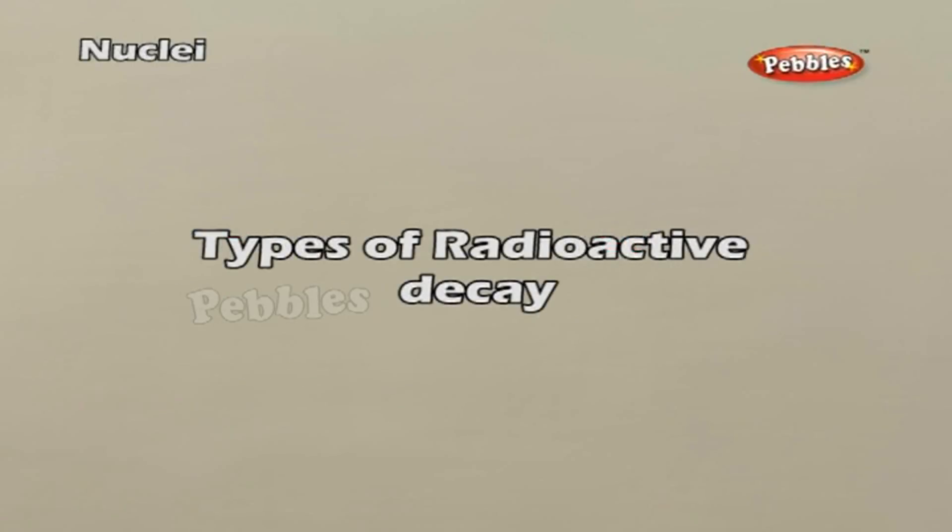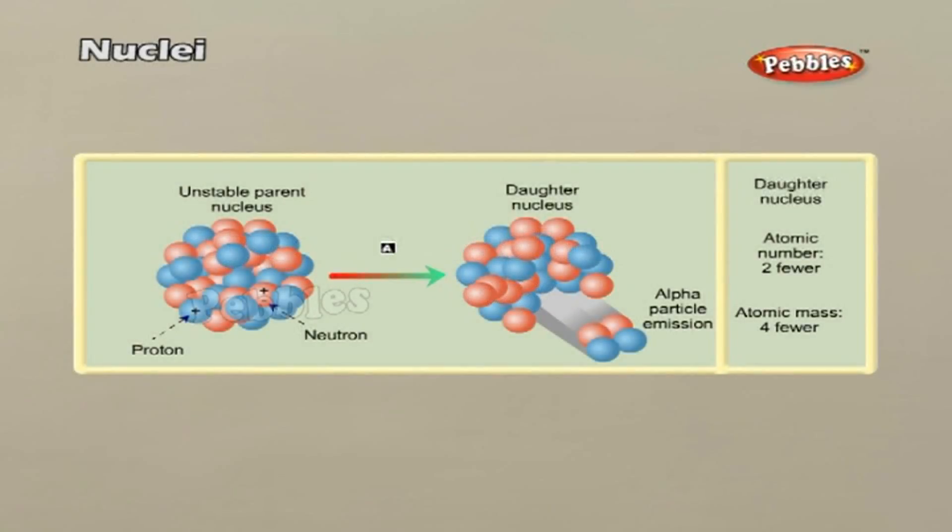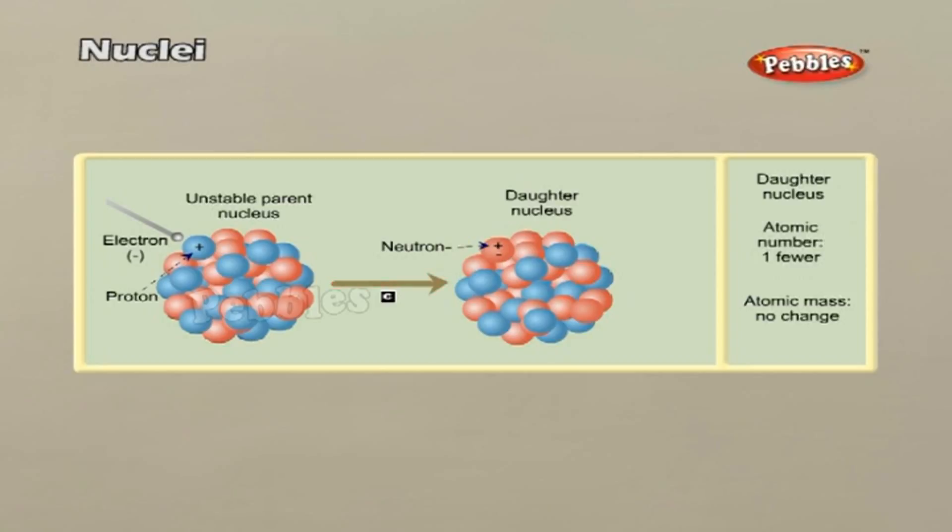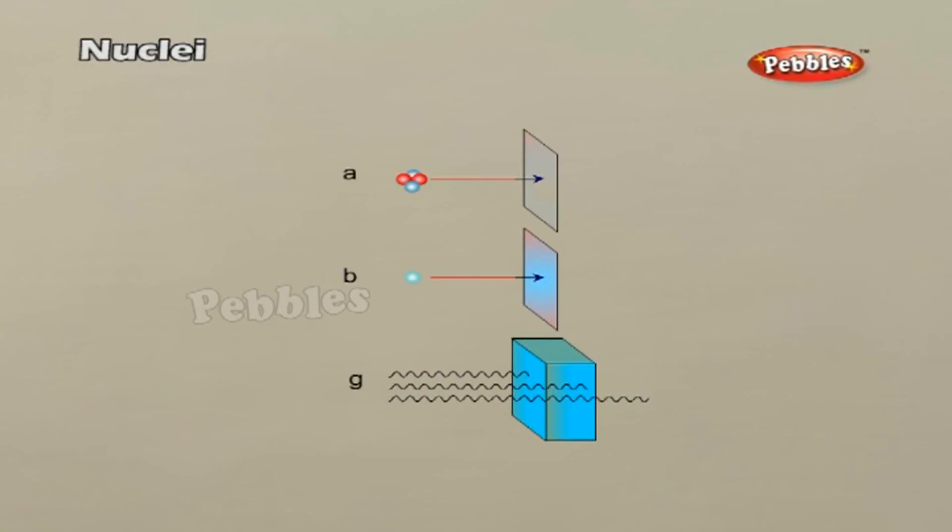Types of Radioactive Decay. Three types of radioactive decay occur in nature. 1. Alpha decay in which a helium nucleus, that is HE42, is emitted. 2. Beta decay in which electrons or positrons, particles with the same mass as electrons but with a charge exactly opposite to that of an electron, are emitted. 3. Gamma decay in which high energy photons are emitted.